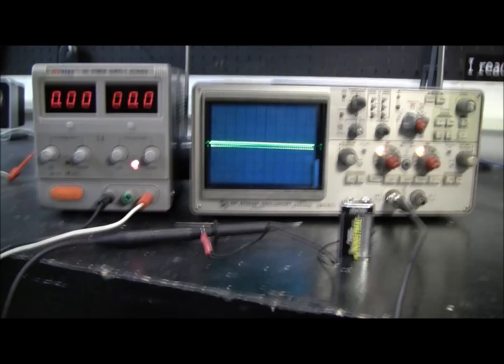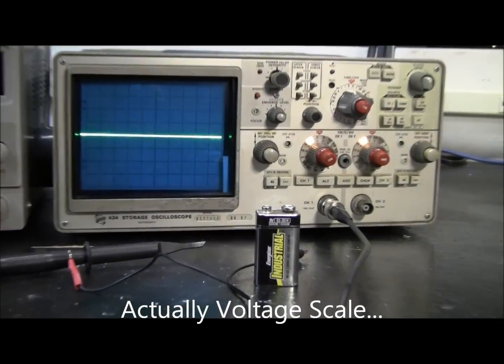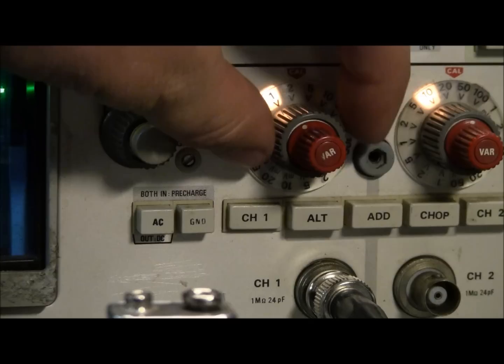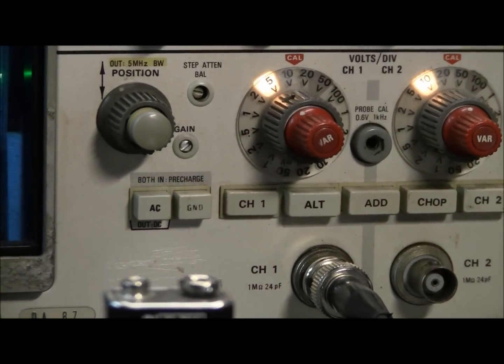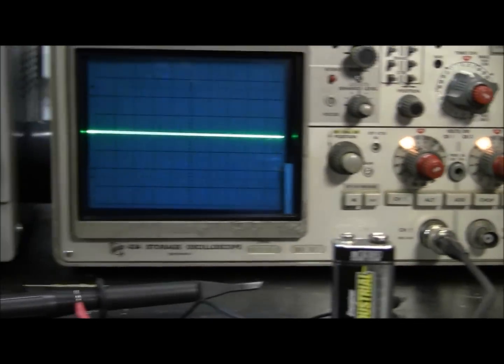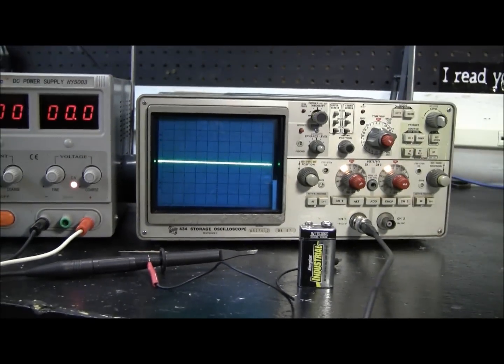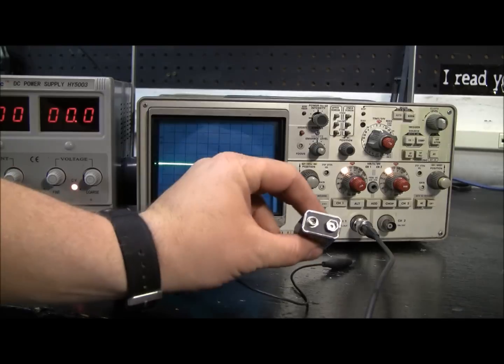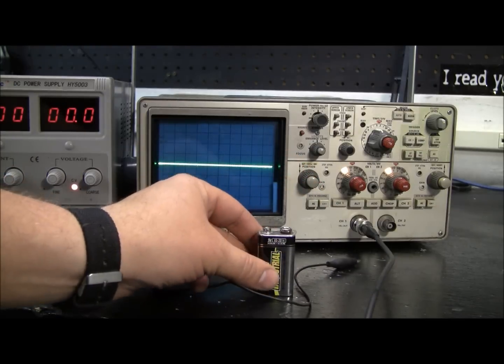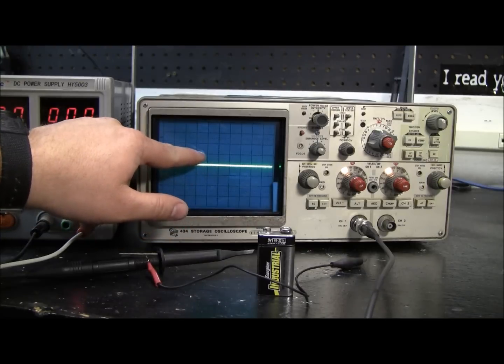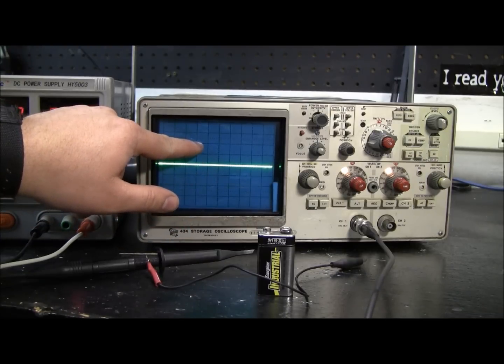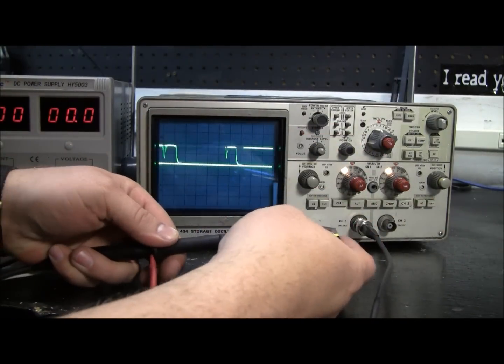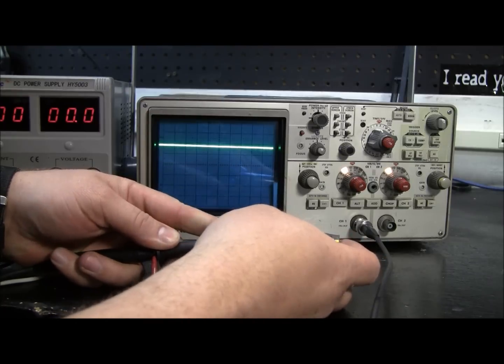So the first thing we need to do is set our time scale. So if we look over here, I'm on one volt. Let's go up to five volts. So I'm on the five volt scale. Every line should be five volts. I have a nine volt battery here. So if I hook it up, it should go up on the positive, almost to this second line. And what do you know, exactly.